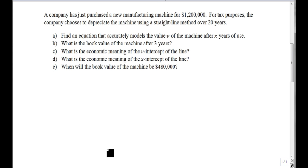The problem we're going to look at is a new manufacturing machine purchased for $1,200,000. For tax purposes, the company chooses to depreciate the machine using a straight-line method over 20 years. The depreciation is the total cost divided by the time, so 1.2 million divided by 20 equals $60,000 depreciation per year.